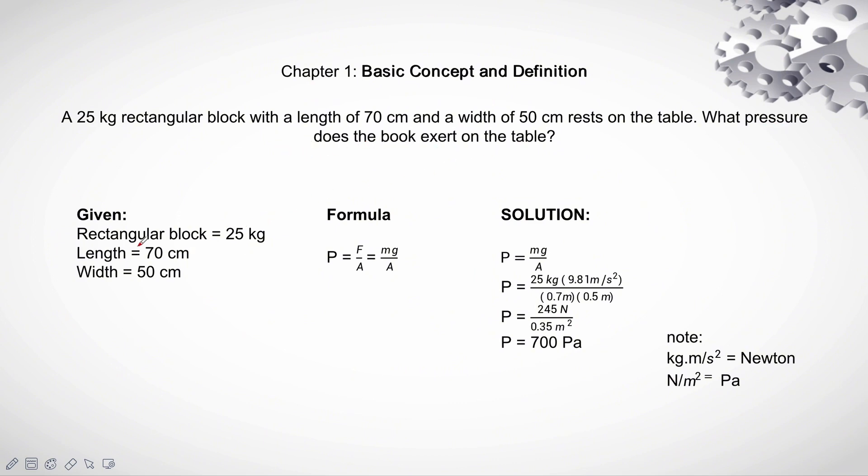So, we have a given rectangular block, 25 kg, length 70 cm, width 50 cm. We will convert our length into meters.